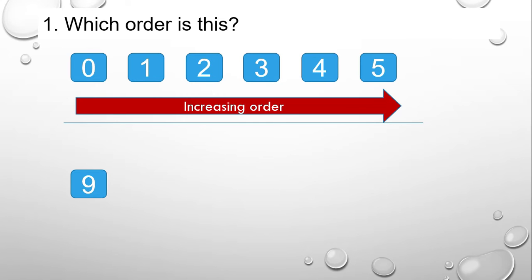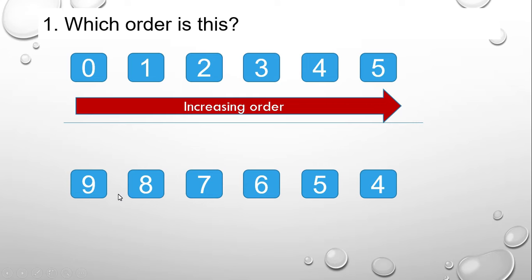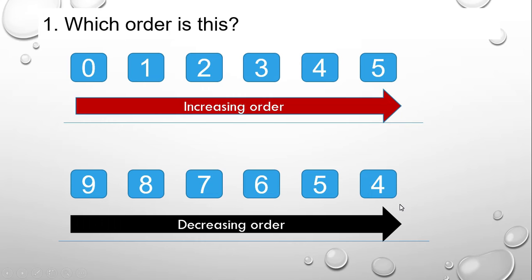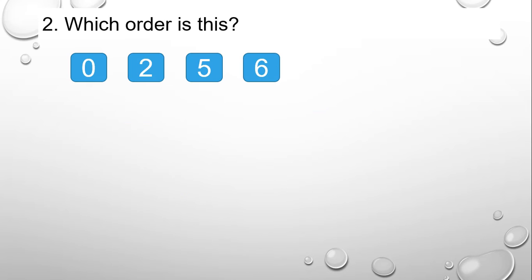What about this set: 9, 8, 7 down to 4? Since 9 is big and 4 is small, we call this the decreasing order. And what about this?